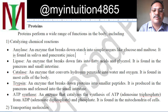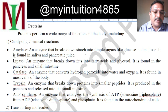ATP synthase is an enzyme which catalyzes the synthesis of adenosine triphosphate, ATP, from ADP — adenosine diphosphate — and phosphate. It is found in the mitochondria of the cell.